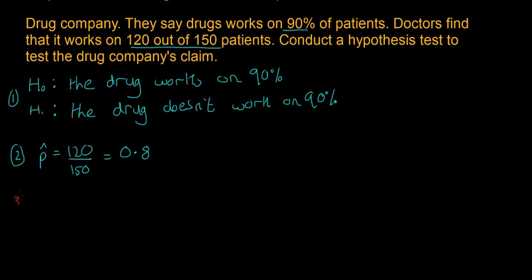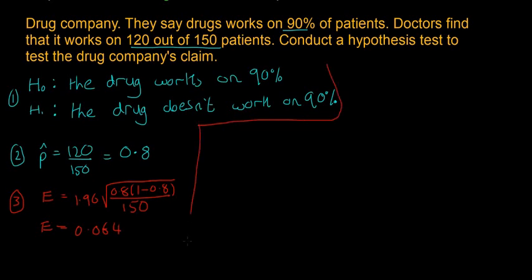Step three, I'll do in red now. If we remember, it's to construct a confidence interval. So E is going to be equal to 1.96 multiplied by the square root of 0.8 times 1 minus 0.8, all divided by 150. And we'll find there that E is equal to 0.064. And so then we need to construct our confidence interval. So I will make some space over here for that and I'll go green.